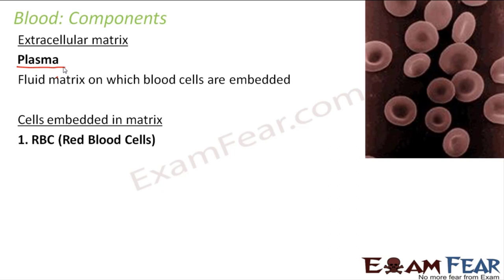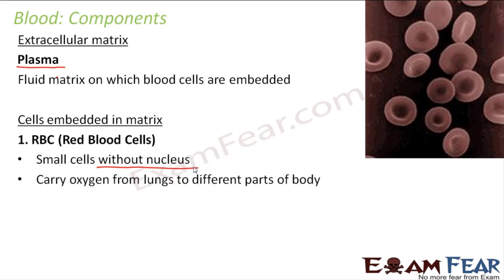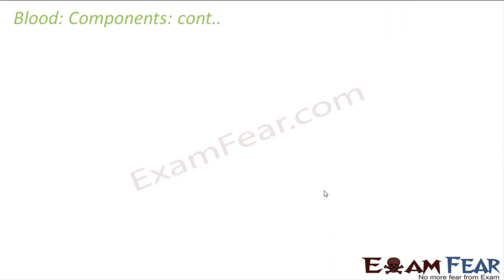What are the different types of cells embedded in the plasma? The first is RBC — red blood cells. These are small cells without nucleus, and this is a point to remember. They carry oxygen from the lungs to different parts of the body. So this is the function of red blood cells — blood helps in transportation, and RBCs specifically carry oxygen from lungs to different parts.